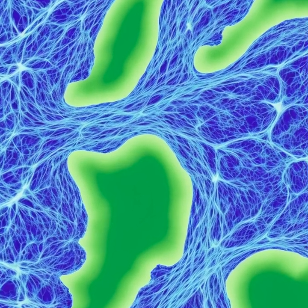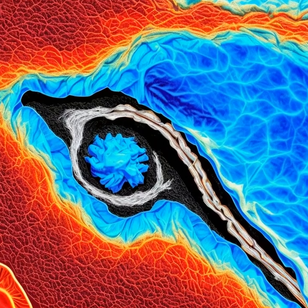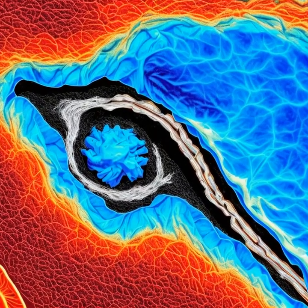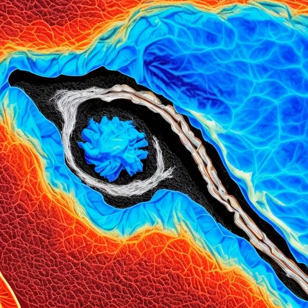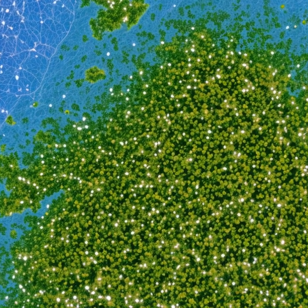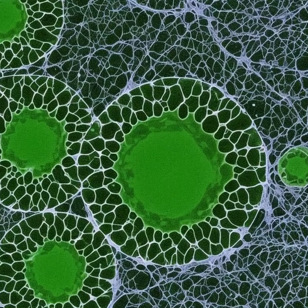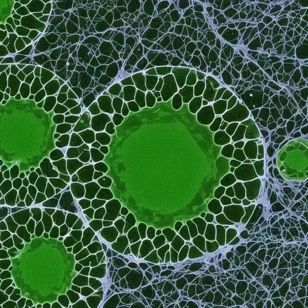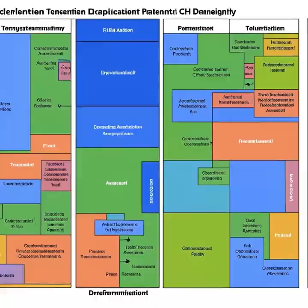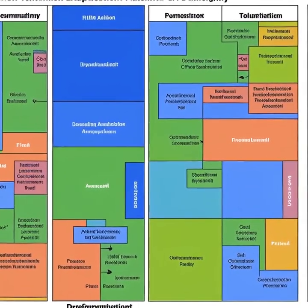Now let's examine the body's immune response to asthma. We'll focus on the involvement of inflammatory mediators, immune cells, and the activation of specific signaling pathways that contribute to the chronic nature of the disease. When the body encounters an asthma trigger, the immune system responds by releasing inflammatory mediators such as histamine, leukotrienes, and cytokines. These mediators play a crucial role in the development of inflammation and bronchoconstriction, leading to the characteristic symptoms of asthma.